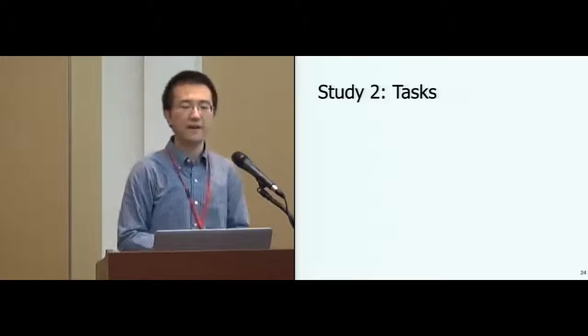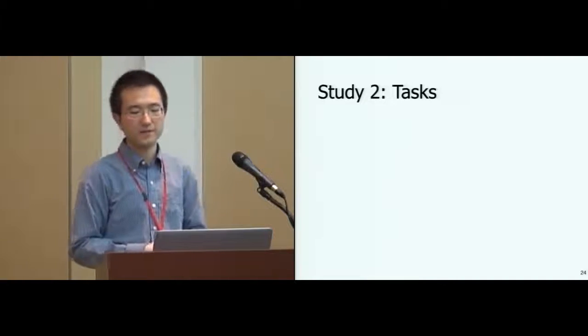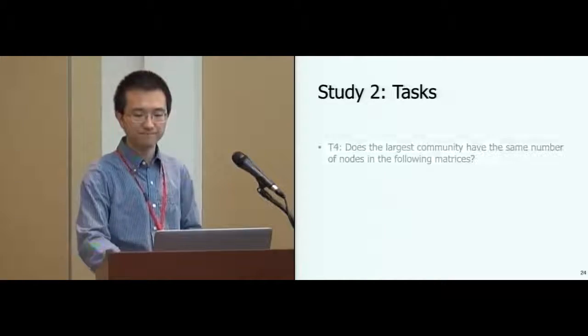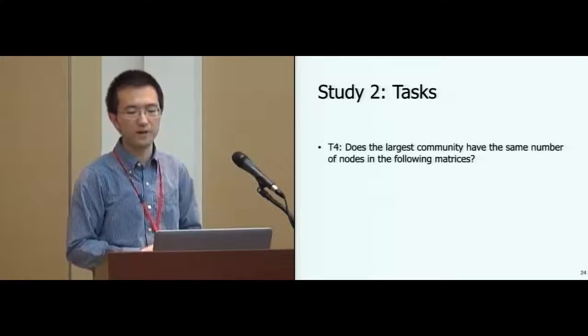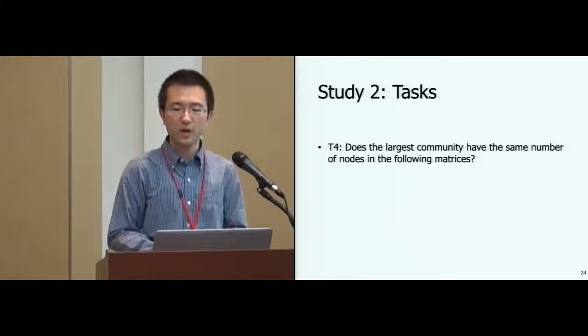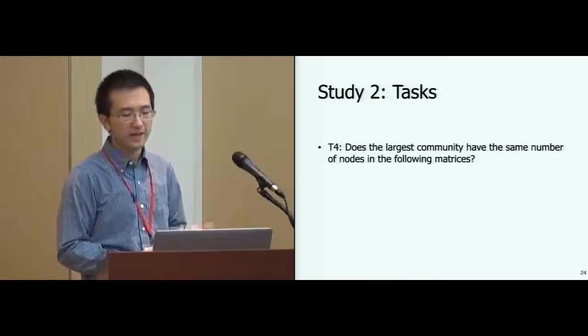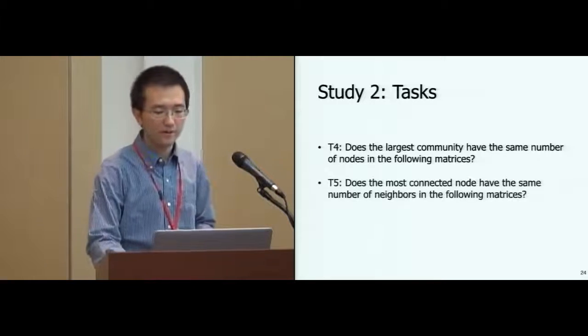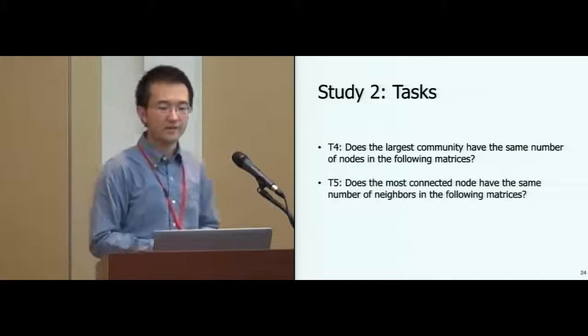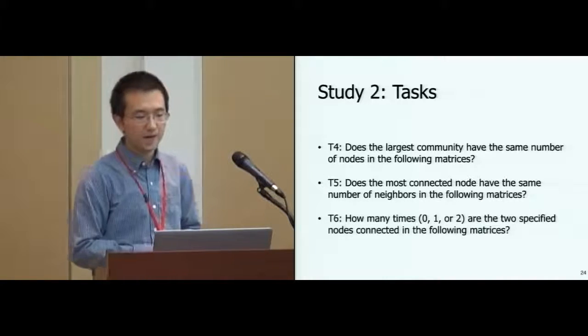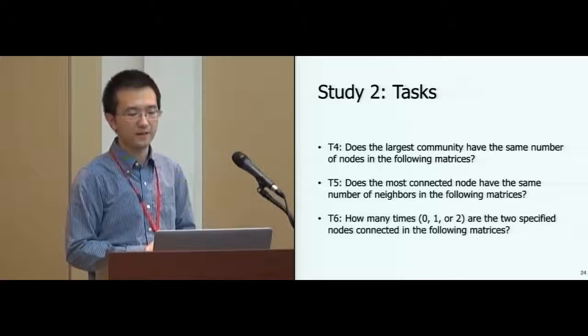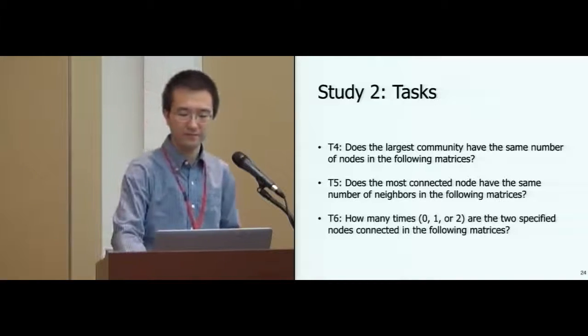Our three tasks modified from the first experiment were used in this study. Given two matrices in one of the three juxtaposition designs, we asked users to determine whether the largest community has the same number of nodes, whether the most connecting node has the same number of neighbors, and how many times the two specified nodes appear in the matrices.